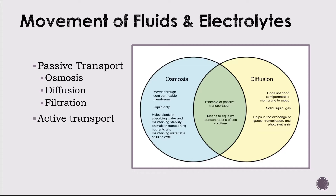Active transport occurs when electrolytes move across the cell membrane from an area of low concentration to high concentration — going against a concentration gradient. Active transport always requires energy expenditure. ATP, the energy source, is released from the cell to enable substances to move through the cell membrane.